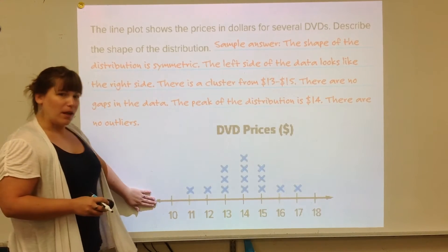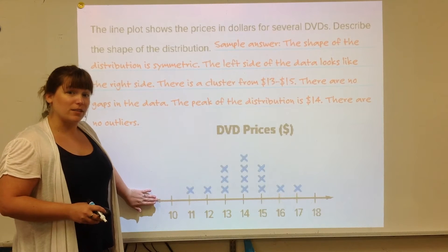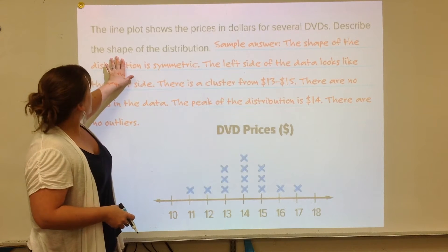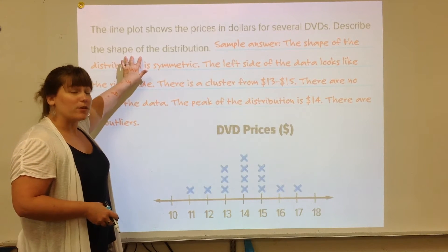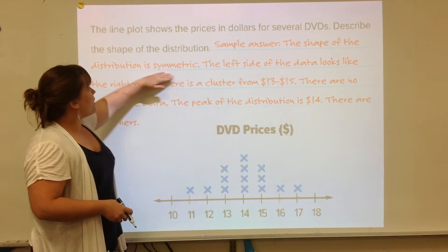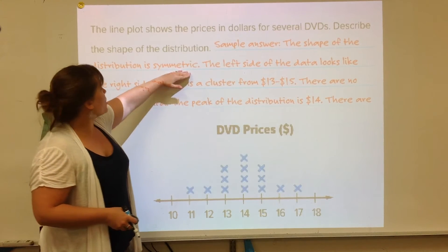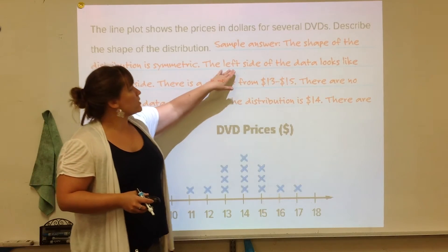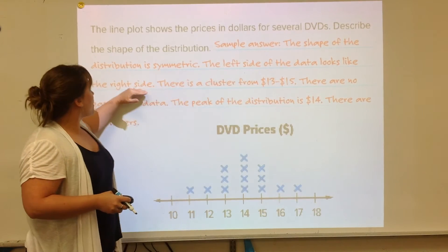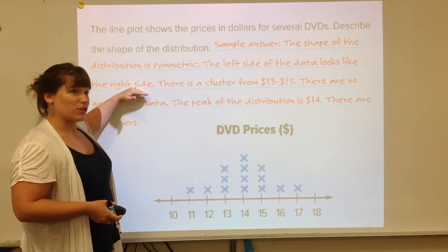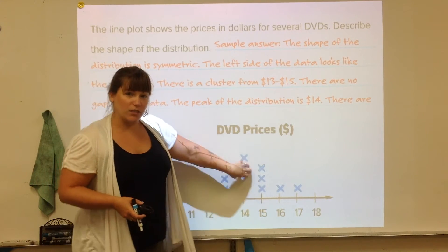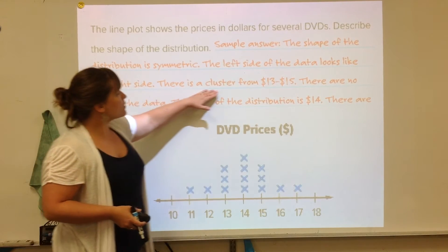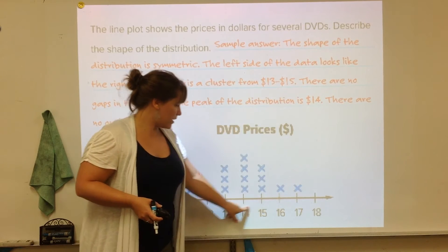Here we have another line plot that is symmetrical as an example of how you can describe using those questions. So the directions say describe the shape of the distribution. First thing you can talk about that it is symmetrical. The shape of the distribution is symmetric. And then that the explanation is that the left side of the data looks like the right side that uses the definition. Then we can talk about cluster. Where are most of the data clustering? There is a cluster from 13 to 15 dollars. So right here.